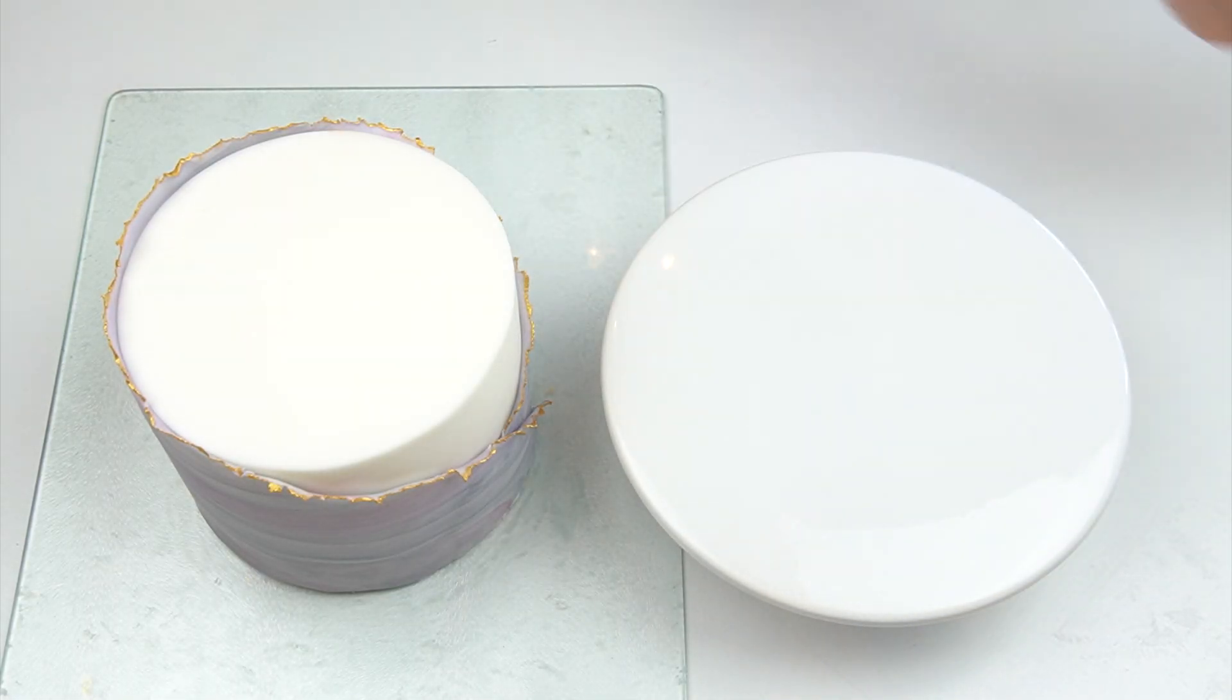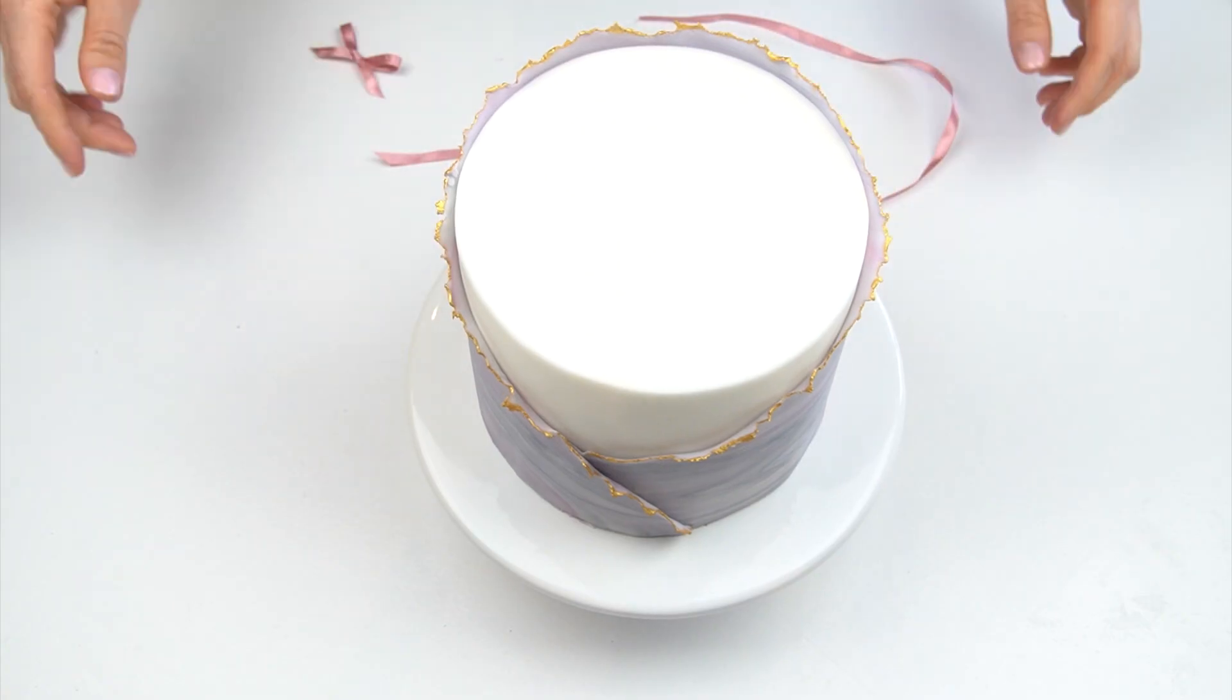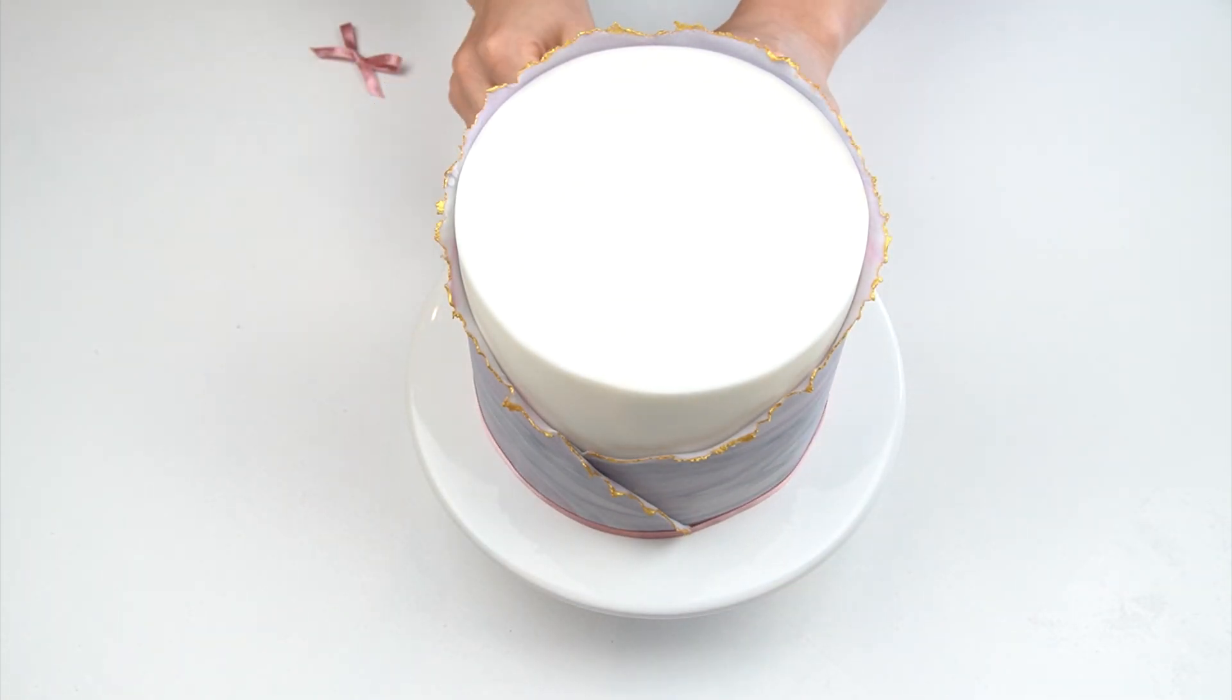I'm going to be placing this cake on my cake stand so I'm going to pop down a small amount of buttercream just to hold that in place. You can then leave it as it is or I'm just going to finish mine off with a piece of satin ribbon around the bottom.